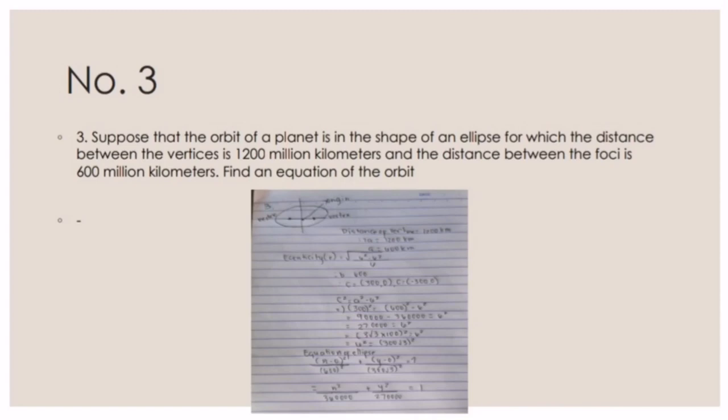Number 3. Suppose that the orbit of a planet is in the shape of an ellipse for which the distance between the vertices is 1,200 million kilometers and the distance between the foci is 600 million kilometers. Find the equation of the orbit. The distance between vertices equals 1,200 kilometers, so 2A equals 1,200, giving A equals 600 kilometers.